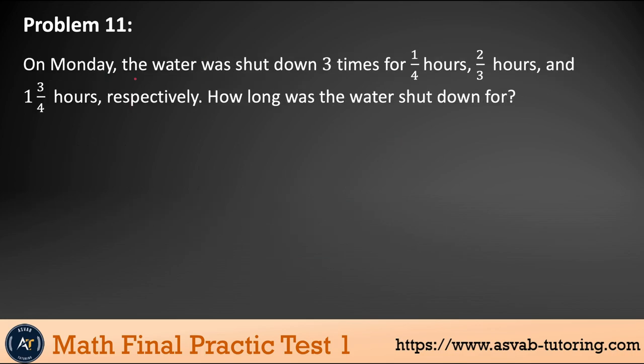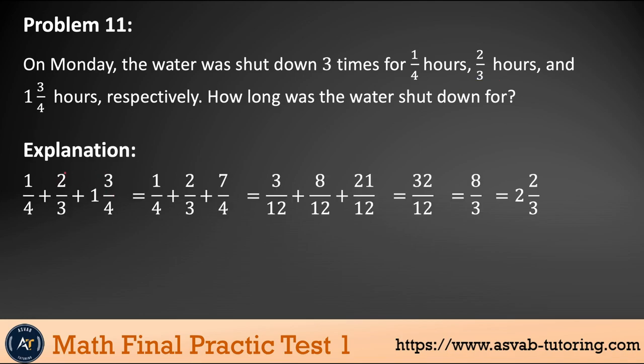Next problem: On Monday, the water was shut down three times—one quarter hour, two thirds hour and one and three fourths hours respectively. How long? It's very simple—all you have to add all together. Anytime you add the fraction, what do you have to do? Make this mixed number into improper fraction here. That gives you four times four plus three, seven over four. Once you have all this pure fraction, then find the common denominator. Three, four, three, four—the common denominator is 12.